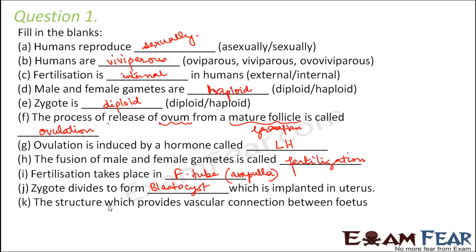The structure which provides vascular connection between the fetus and the uterus is called? Since the uterus is part of the mother's body, the connection between the fetus and the mother is called the placenta.